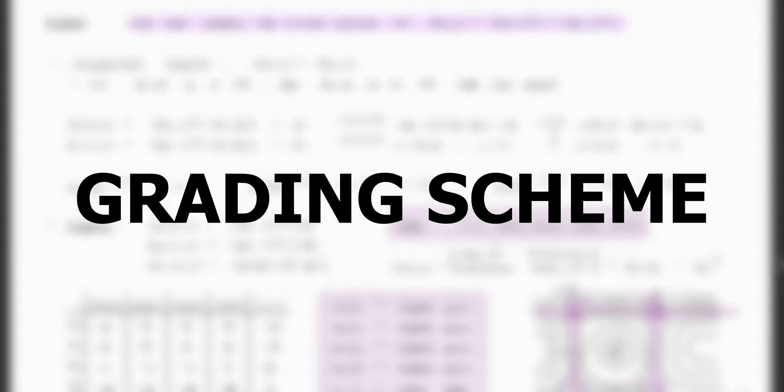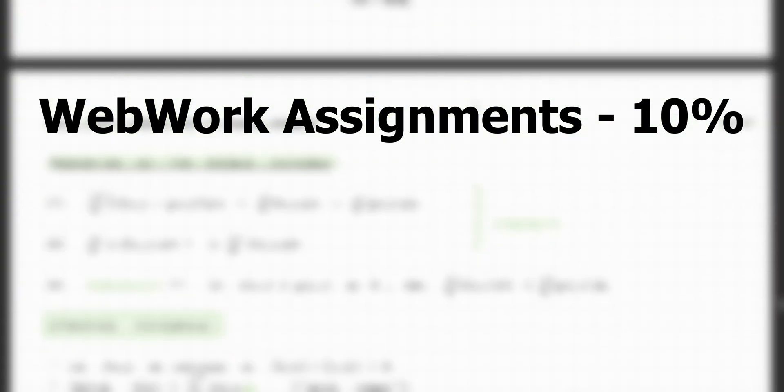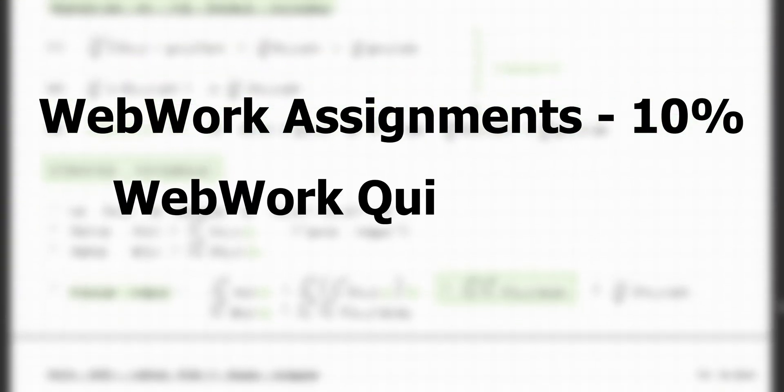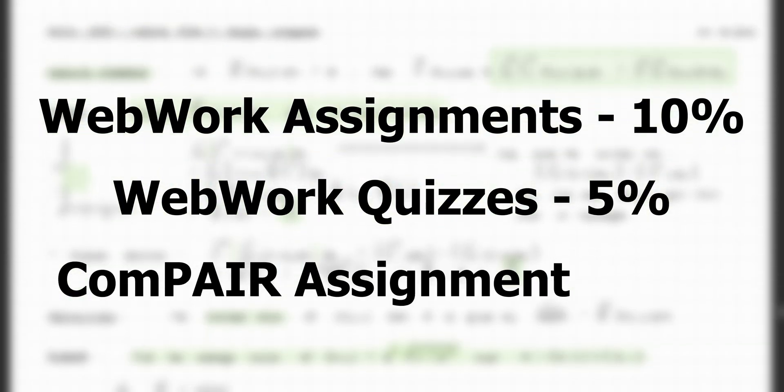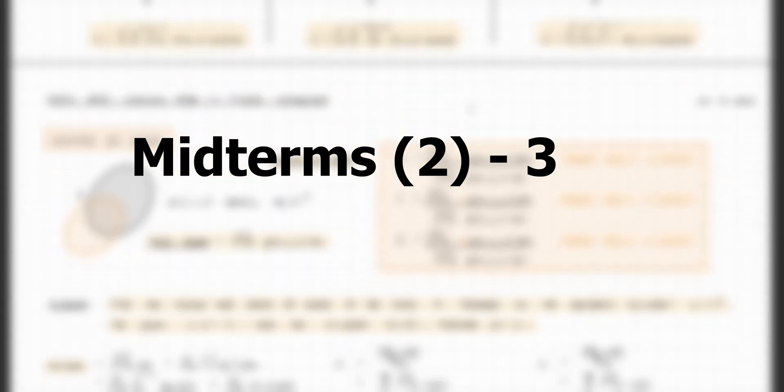In terms of the grading scheme for Math 253, here's the breakdown of everything that you'll be graded on and the weights associated with each item. Starting with your WebWork assignments, these are weighted at 10% of your overall grade. Your WebWork quizzes are worth 5% and your Compare assignments are worth another 5%. At the end of the term your lowest two WebWork assignment scores will be dropped.